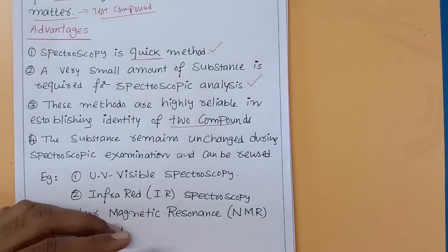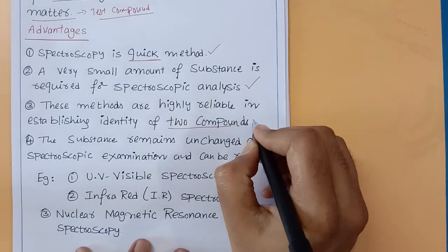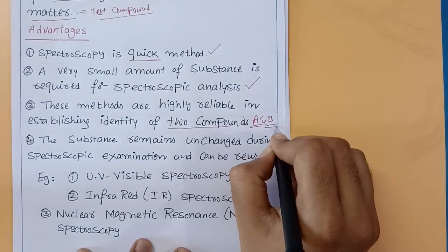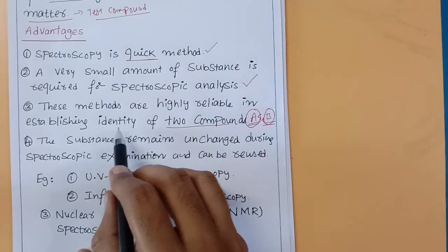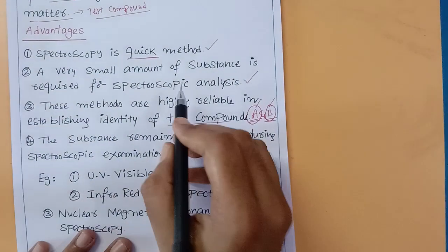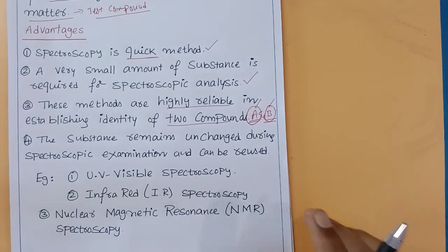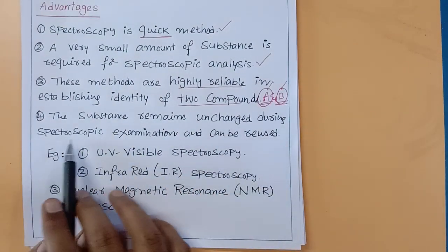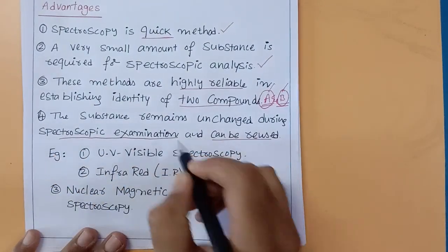If you have two different compounds — for example, compound A and compound B — each has its own separate properties, and the two components are different. Using spectroscopy, you can identify each one separately, and the results are very reliable and trustworthy. Fourth advantage: the substances remain unchanged during the spectroscopic examination and can be reused.